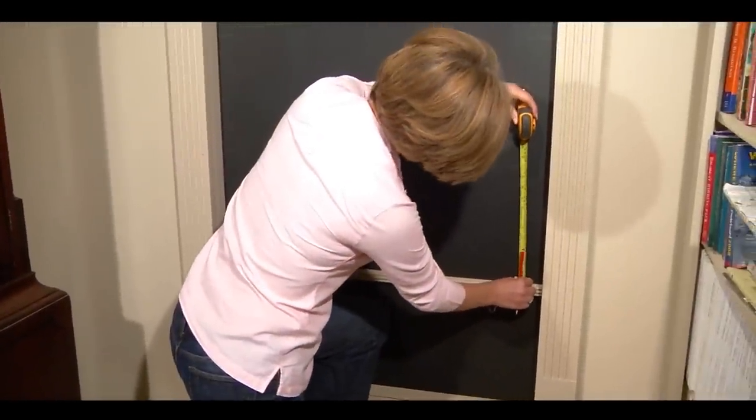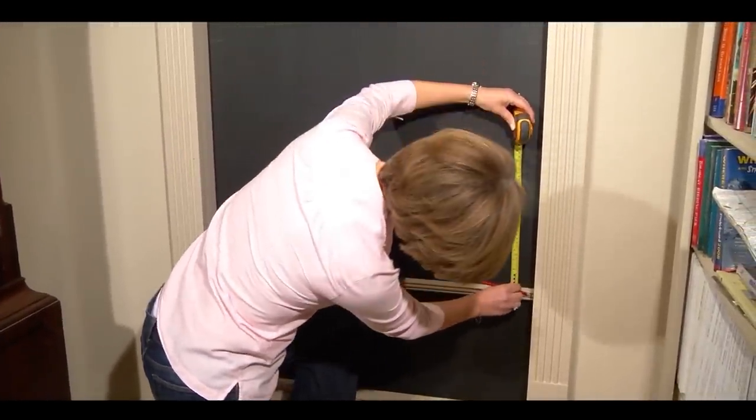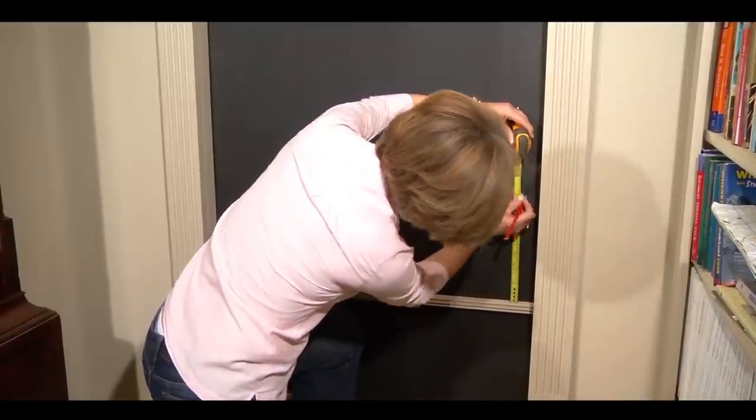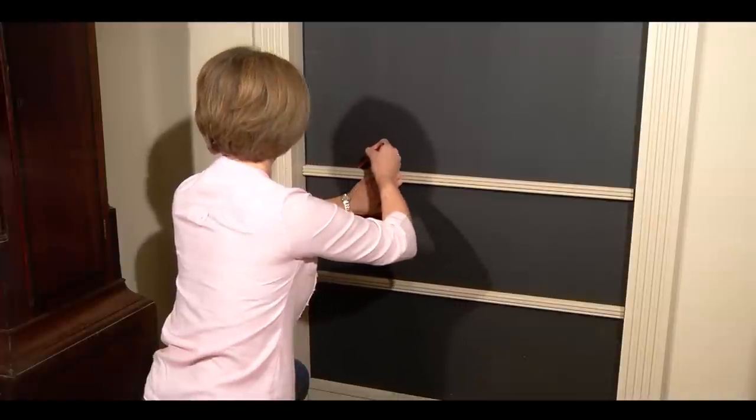Using a tape measure and pencil, measure from the top of the shelf below the height of the next row of books you are working on. Draw a pencil line across the door.